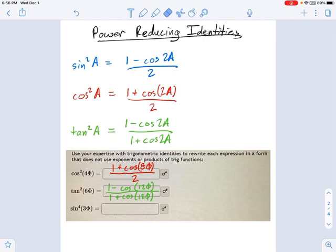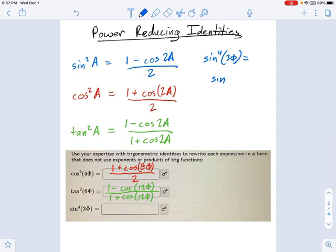So what I want you to do is think about what sine to the fourth is. Sine to the fourth of 3 phi is equal to sine squared of 3 phi, and that whole thing's squared. So first, I reduce the power of sine squared 3 phi.